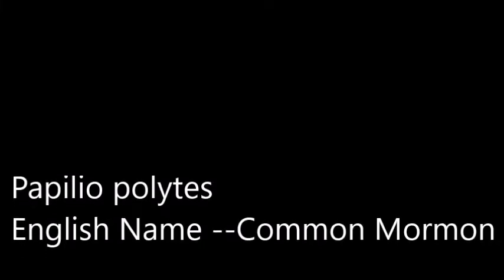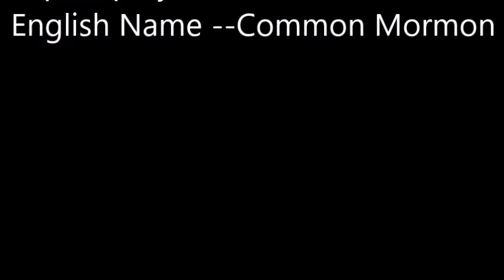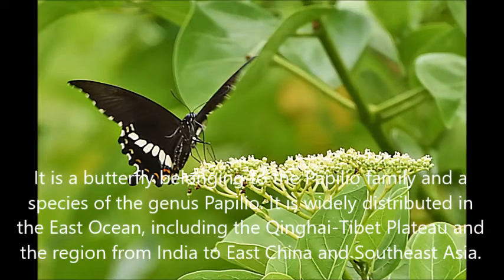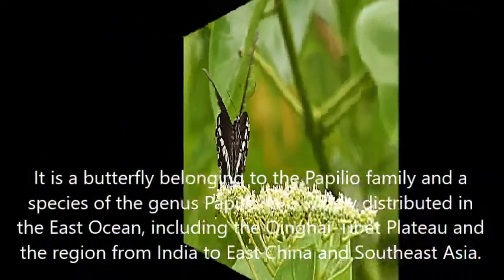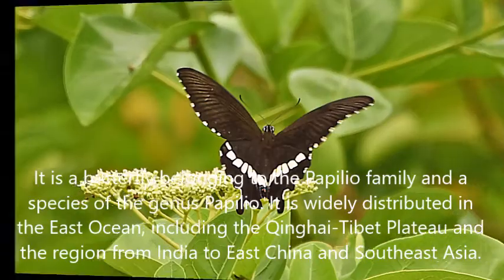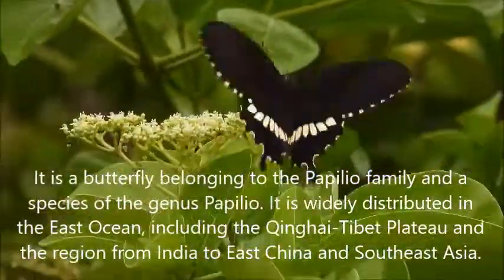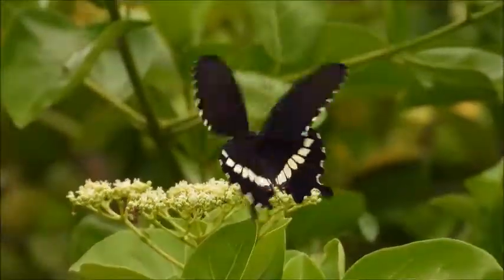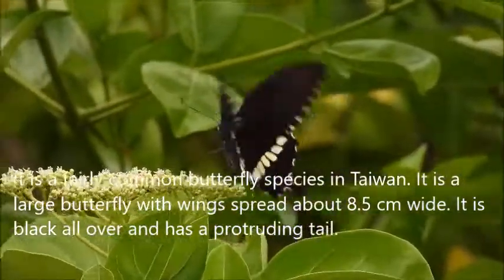Papilio polytes, the Common Mormon butterfly, belongs to the genus Papilio. It is widely distributed in the Eastern region, including the Qinghai-Tibet Plateau, and ranges from India to Eastern China and Southeast Asia. It is a fairly common butterfly species in Taiwan.